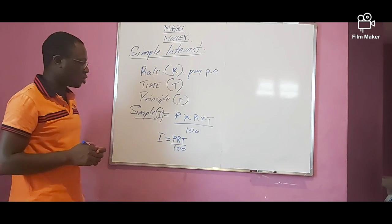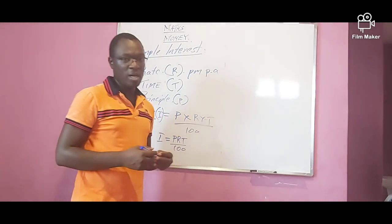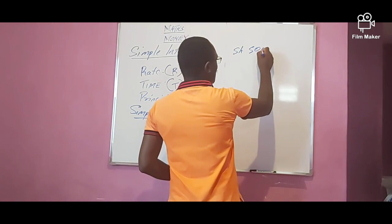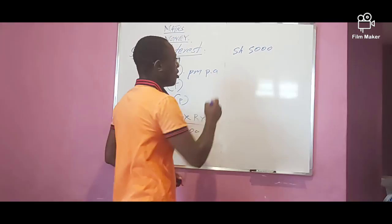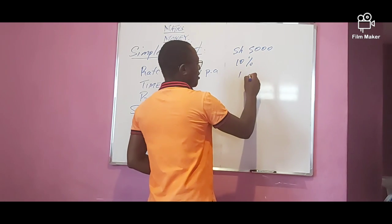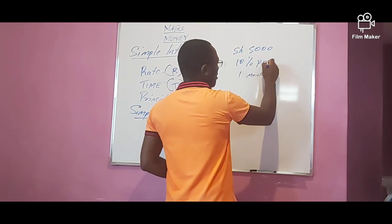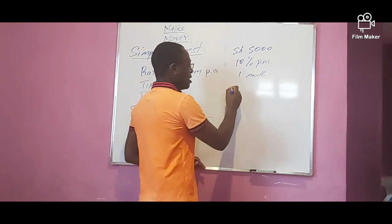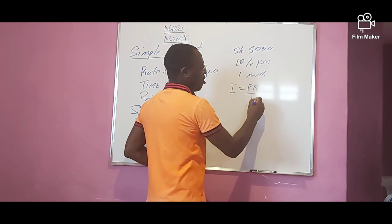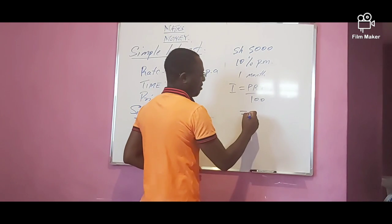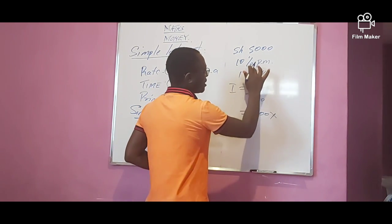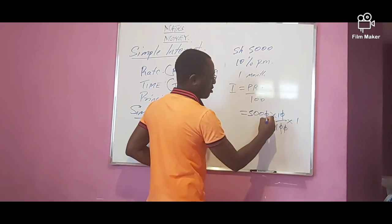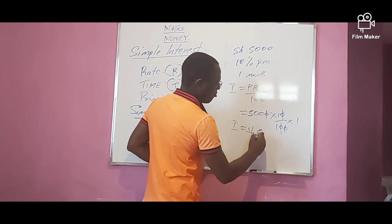Now let's have an example. Kamau borrowed money from Tala — he borrowed 5,000 shillings, which is being charged at a rate of 10% for one month. The rate is per month. How much did Kamau pay at the end of one month? Simple interest equals principal times rate times time over 100, which equals 5,000 times 10 times 1 over 100. So you pay interest of 500 shillings.